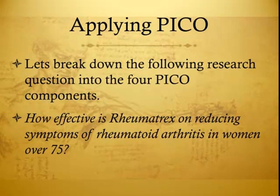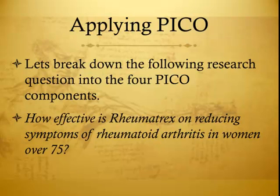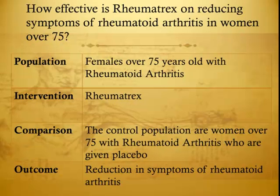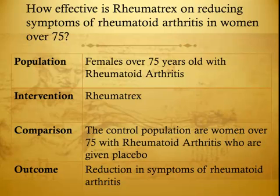Let's break down the following research question into the four PICO components. How effective is Rheumatrix on reducing symptoms of rheumatoid arthritis in women over 75? Population: Females over 75 years old with rheumatoid arthritis. Intervention: Rheumatrix. Comparison: Women over 75 with rheumatoid arthritis given a placebo. Outcome: Reduction in symptoms of rheumatoid arthritis.